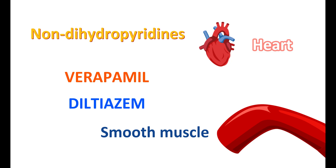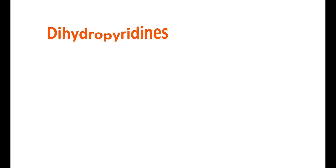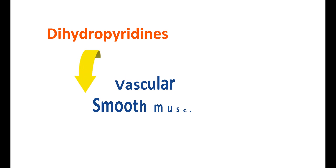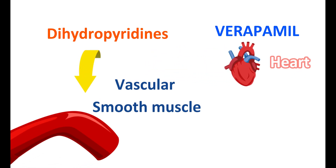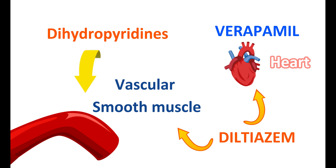The selectivity of non-dihydropyridines is somewhat different from each other. Verapamil is more selective towards the heart, whereas diltiazem can act on both heart and smooth muscle. In summary: dihydropyridines are selective for vascular smooth muscle, verapamil is selective for cardiac muscle, and diltiazem can act on both. Because of these differences in selectivity, these drugs differ in clinical uses as well as side effects.